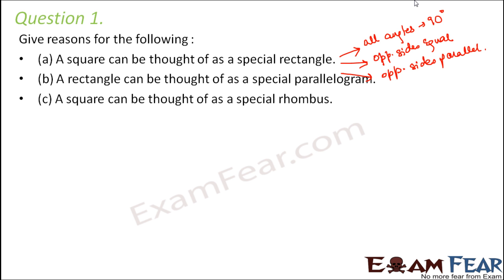A rectangle can be thought of as a special parallelogram. Yes, of course, because what are the criteria to become a parallelogram? Opposite sides should be parallel and opposite sides should be equal. A rectangle satisfies those criteria and on top of that has some extra features. What is that extra feature? All angles are equal, which is not so in the case of a parallelogram. So we can say that a rectangle is also a special parallelogram.